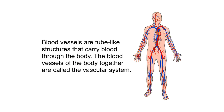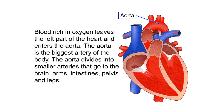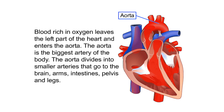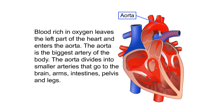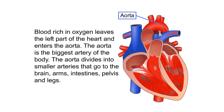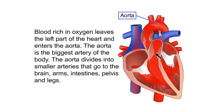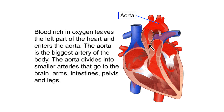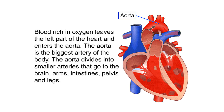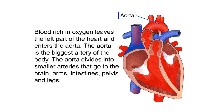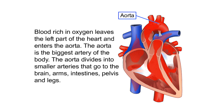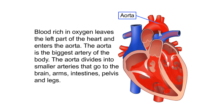Blood vessels are tube-like structures that carry blood through the body. Together, they are called the vascular system. Blood rich in oxygen leaves the left part of the heart and enters the aorta, the biggest artery of the body. The aorta divides into smaller arteries that go to the brain, arms, intestines, pelvis, and legs.